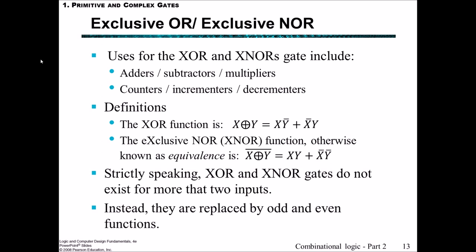We define the XOR function in this way, which is with this symbol, plus with the circle around it, and it's equal to X and not Y or not X and Y. So the exclusive NOR function, which we called the equivalence function, looks like this. Just the XOR function complemented, and remembering what we proved in the truth table with the equivalence makes sense here that it's X and Y or not X and not Y. Strictly speaking, the XOR and XNOR gates don't actually exist for more than two inputs. Instead we would replace them by odd and even functions, which we'll look at in later slides.